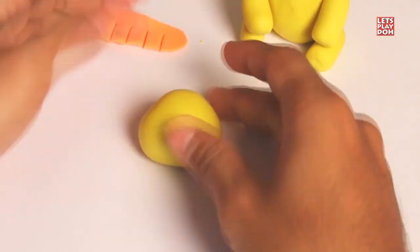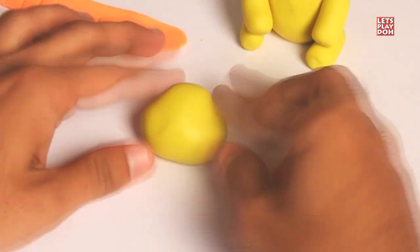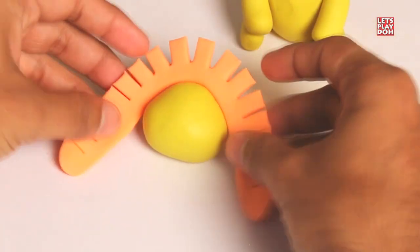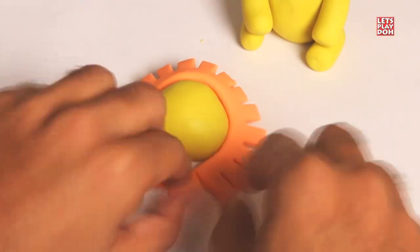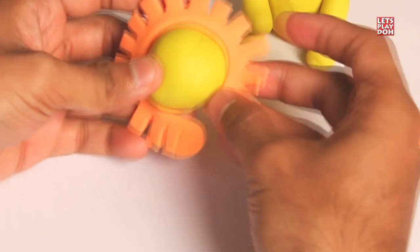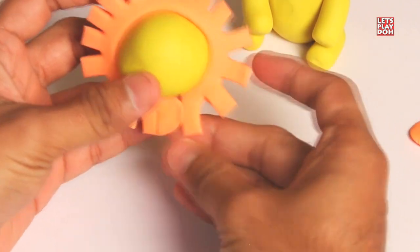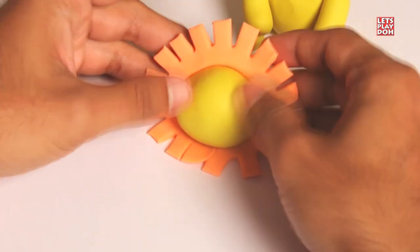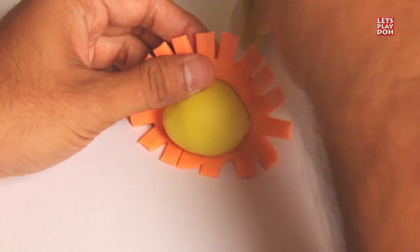And now let's take the round yellow Play-Doh which is of course the head of the lion. And take the orange Play-Doh. And here we're going to wrap the orange Play-Doh around the yellow. This is of course the lion's head. But isn't it remarkable how much it looks like the sun?